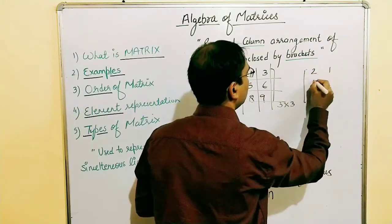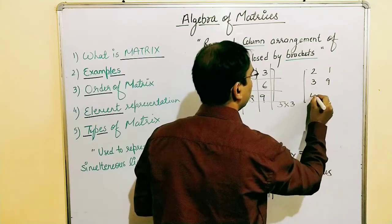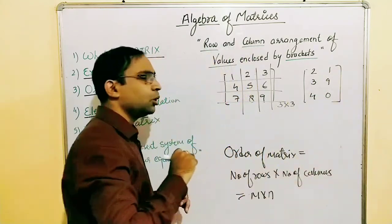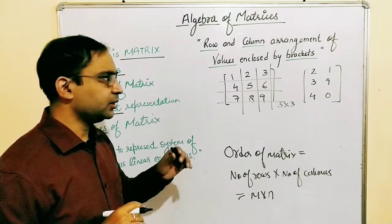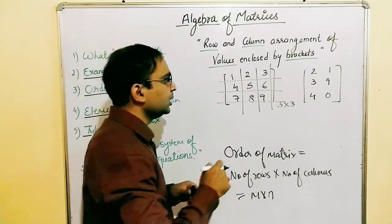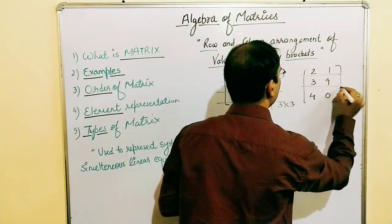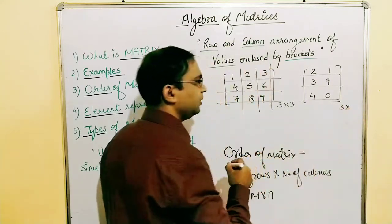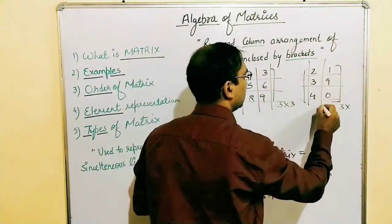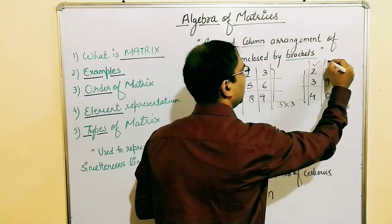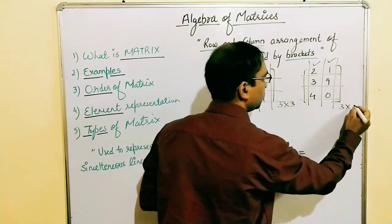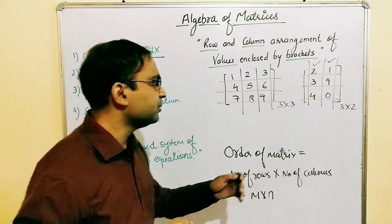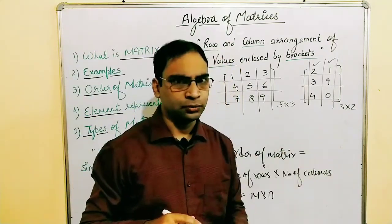Let's see one more example with elements 2, 1; 3, 9; and 4, 0. What will be the order of this matrix? We have rows one, two, and three — so three rows. And we have two columns: column number one and column number two. So the order of this matrix is 3 × 2.